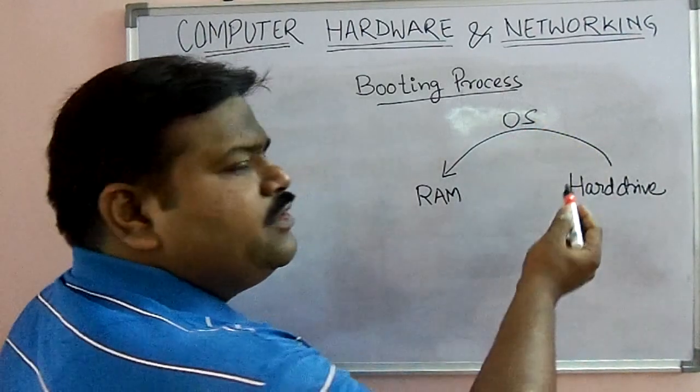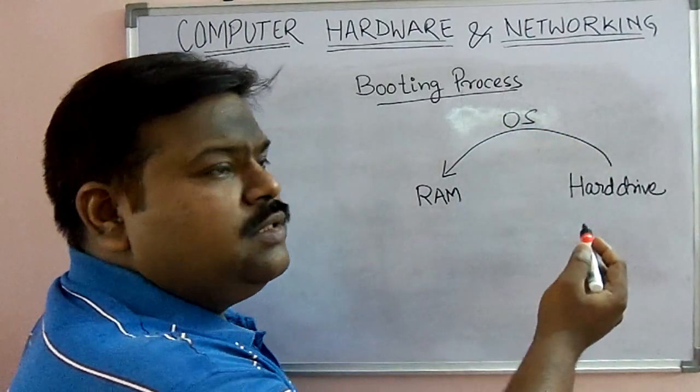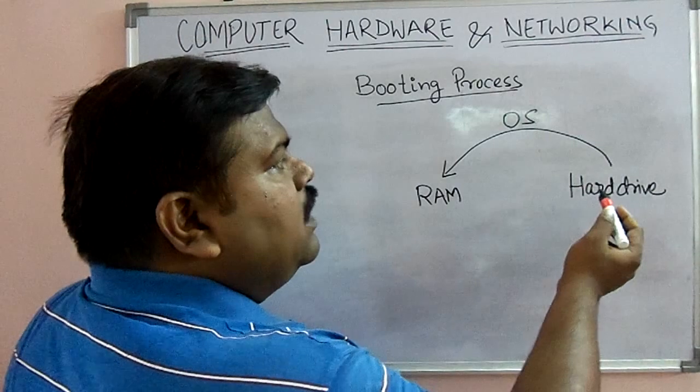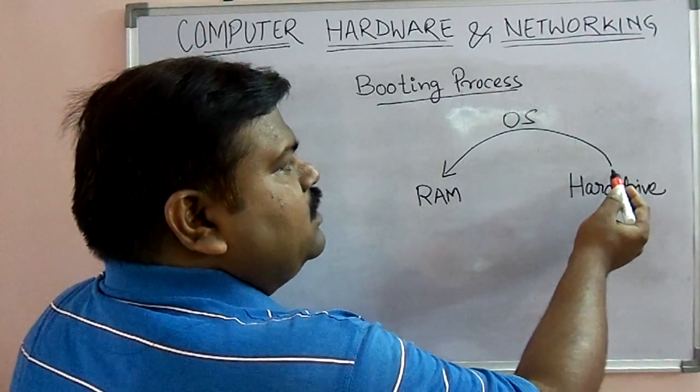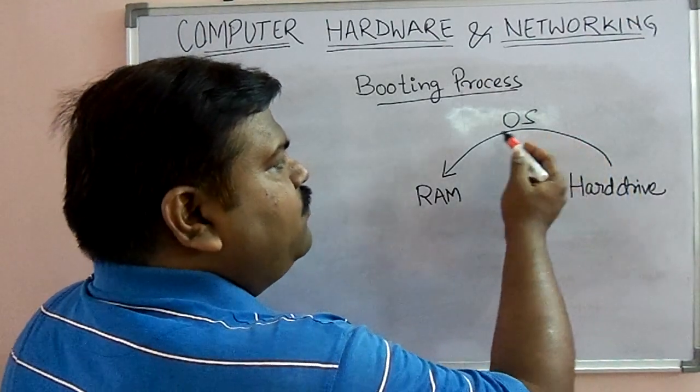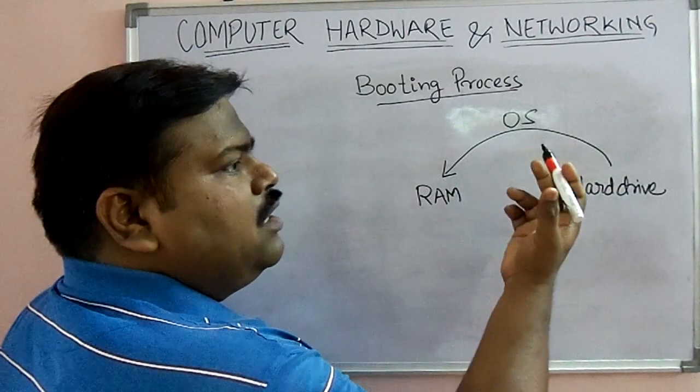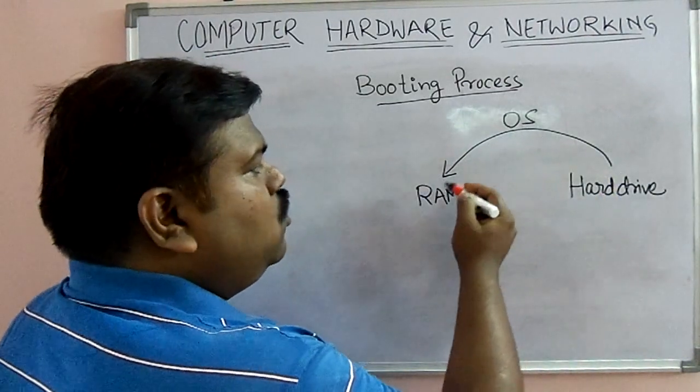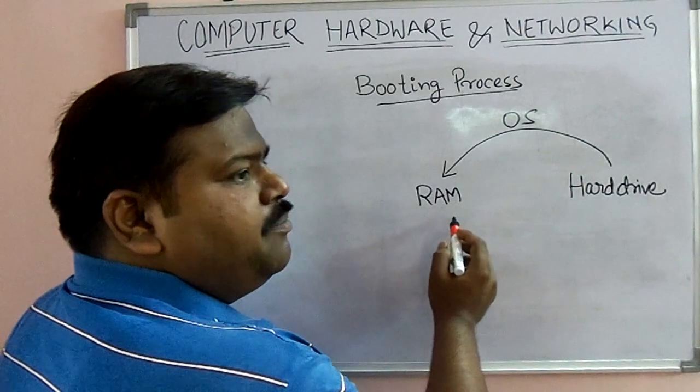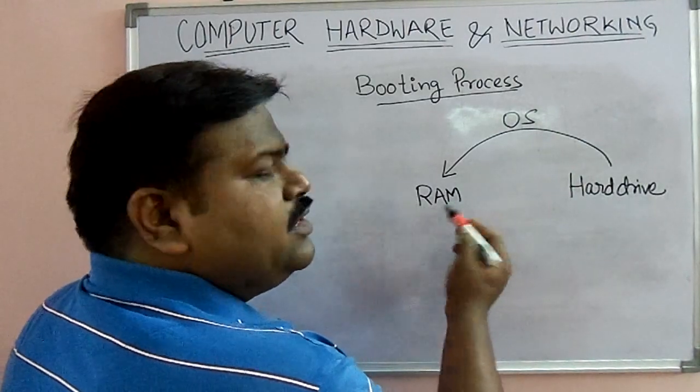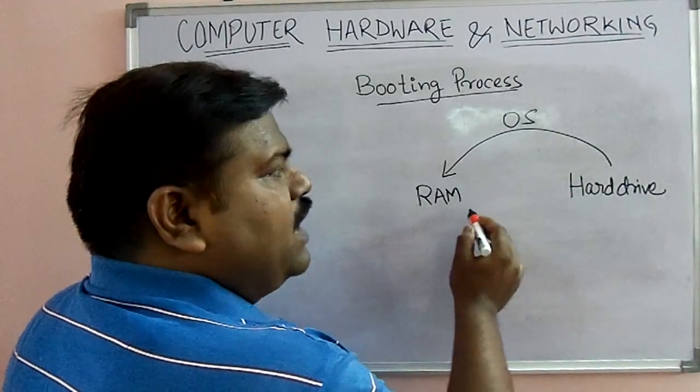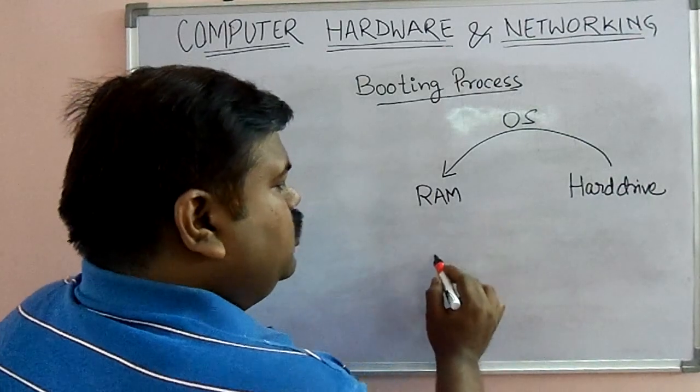Our operating system, like Windows 8 or Windows 7, starts coming from the hard drive and a minimal version is loaded into this RAM. Because RAM is temporary and it is fast, a user works on RAM.